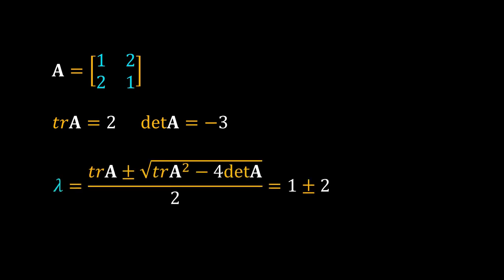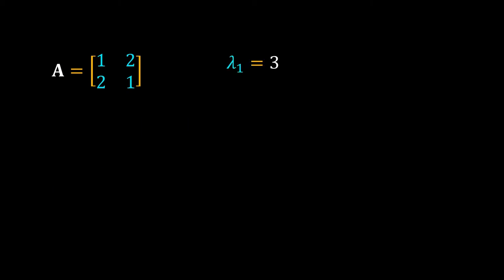So the eigenvalues are 3 and minus 1. Now we will calculate the eigenvectors for these two eigenvalues. We will calculate first for lambda equal to 3.